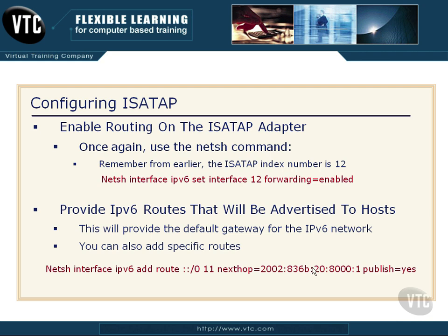Now if all this IPv6 stuff is a little bit foggy, welcome to the club — it's going to take some getting used to. Watch Part 2 of configuring ISATAP a couple of times, and I would strongly encourage you to go through this on your own machine and just get comfortable with it. But this is the way to manually configure ISATAP on a Windows Server 2012 box.